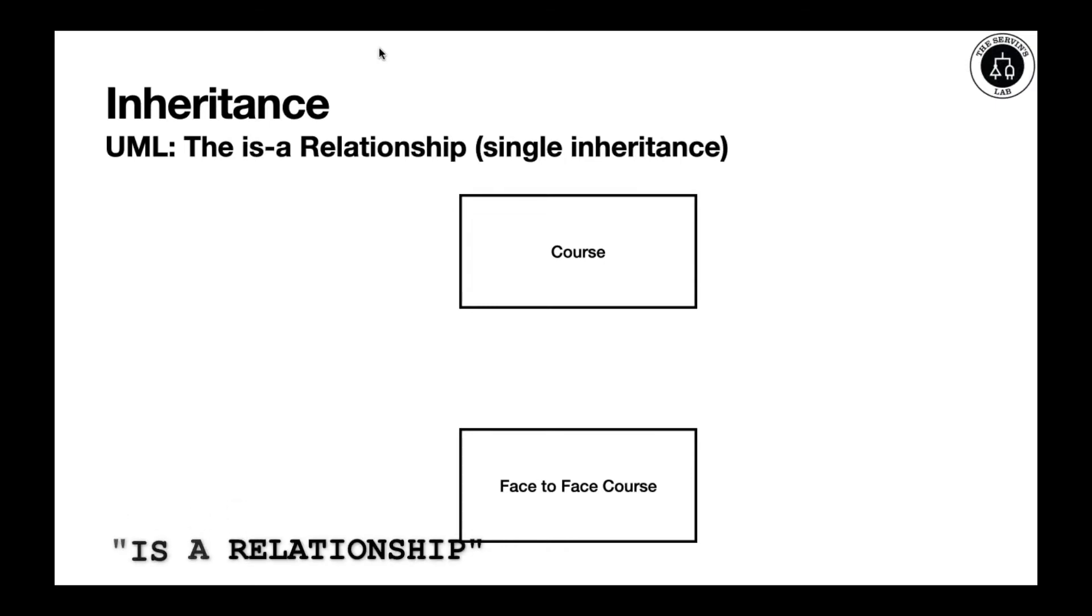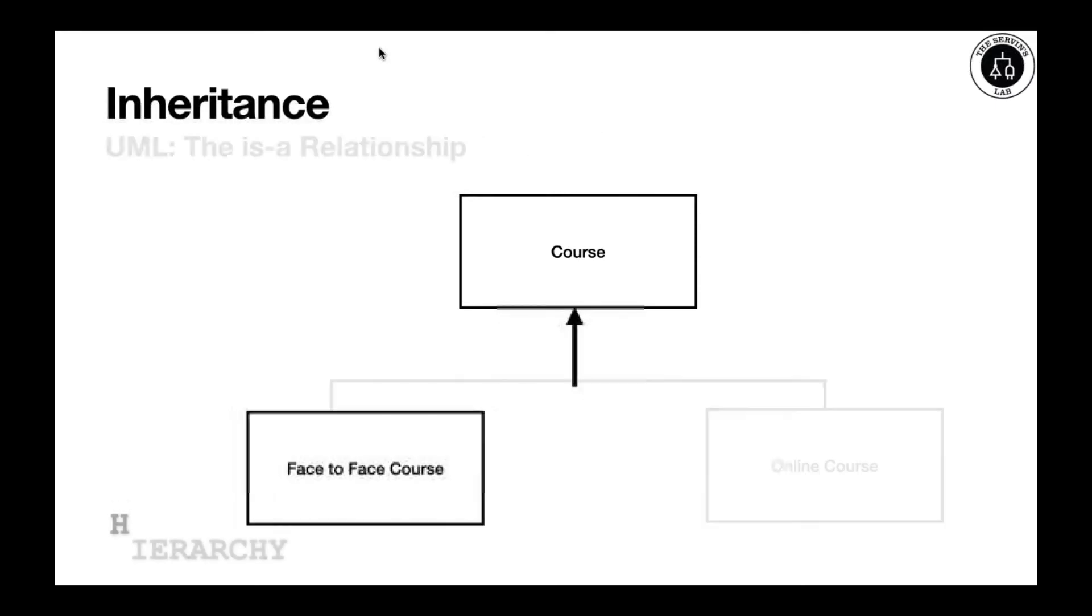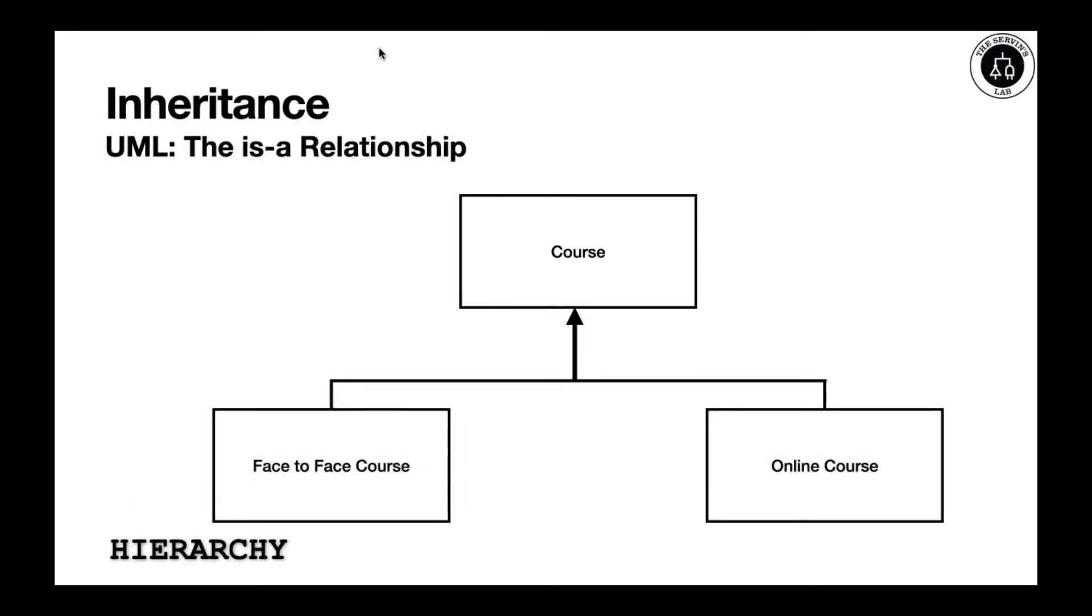For example, when you have a superclass course, we might have two types of courses: a face-to-face or an online class. This extension will say a face-to-face course is a course, but we can also have an online course that is also a course. So now you have this family where face-to-face course and online course both extend the attributes of a course. This is called an is-a relationship.